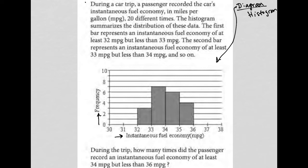So the question says, during a car trip, a passenger recorded the car's instantaneous fuel economy in miles per gallon 20 different times. The histogram summarizes the distribution of these data.